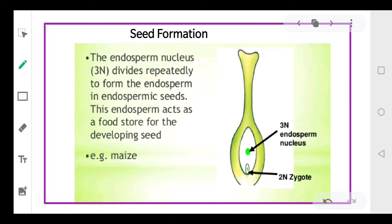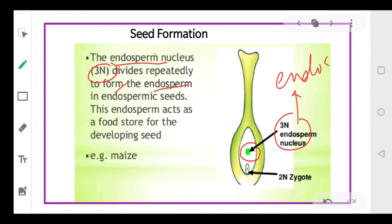The endosperm nucleus has 3n because three structures have fused. The endosperm is triploid - 3n will divide to form the endosperm, and this endosperm will store large amounts of food material, as it occurs in case of maize.